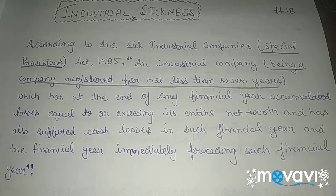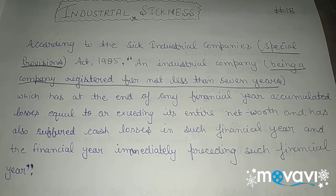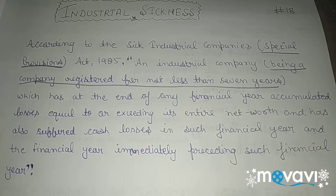It's a slightly confusing definition, but if you understand it carefully, it will become clear. The Sick Industrial Companies Act 1985 splits the sick part into three conditions. First: the company's registration should not be less than seven years. Second: the industry should have accumulated losses in any financial year, and those accumulated losses should be equal to or exceeding its net worth. Third: apart from the accumulated losses, the company also faces some cash loss during that financial year.